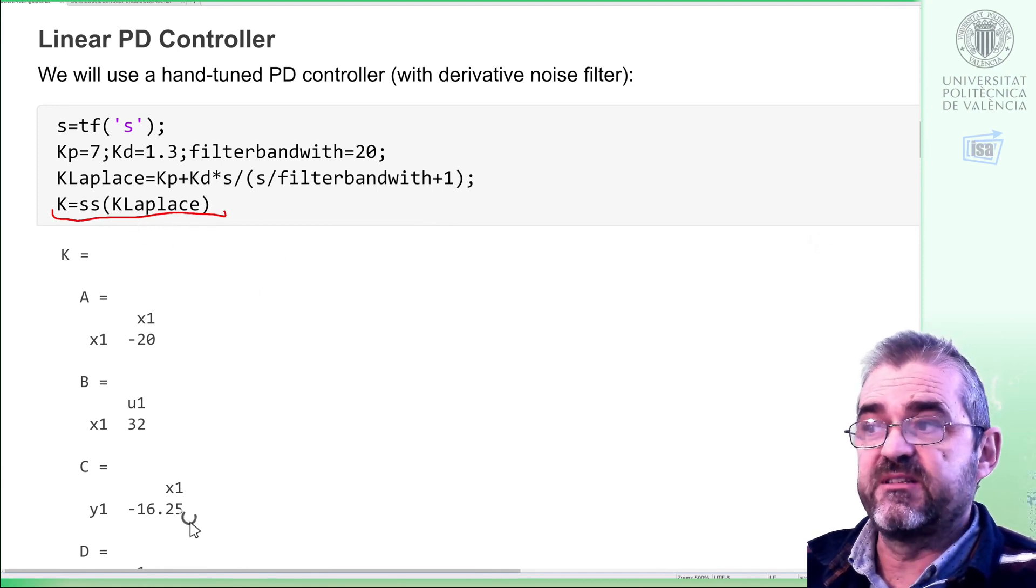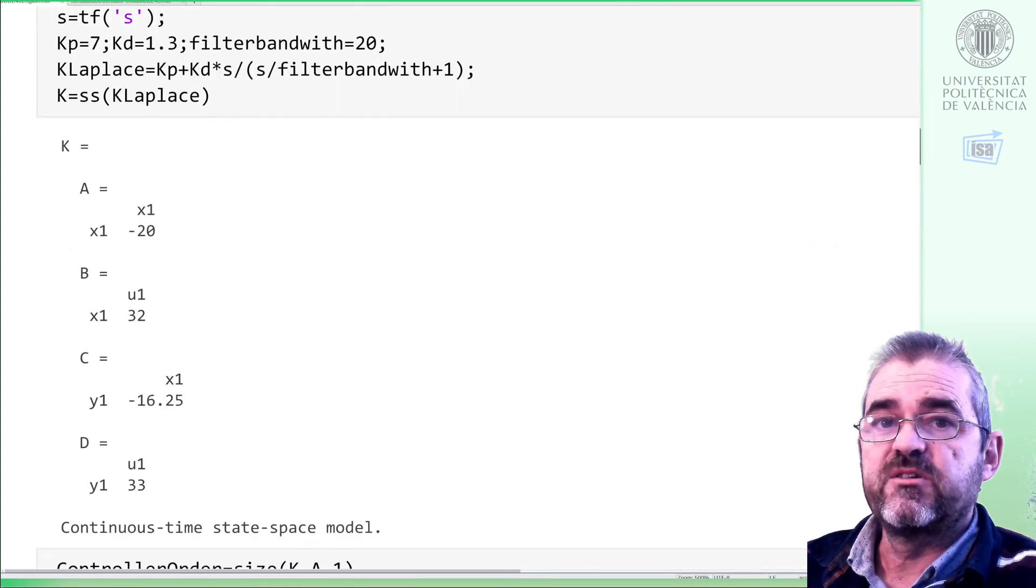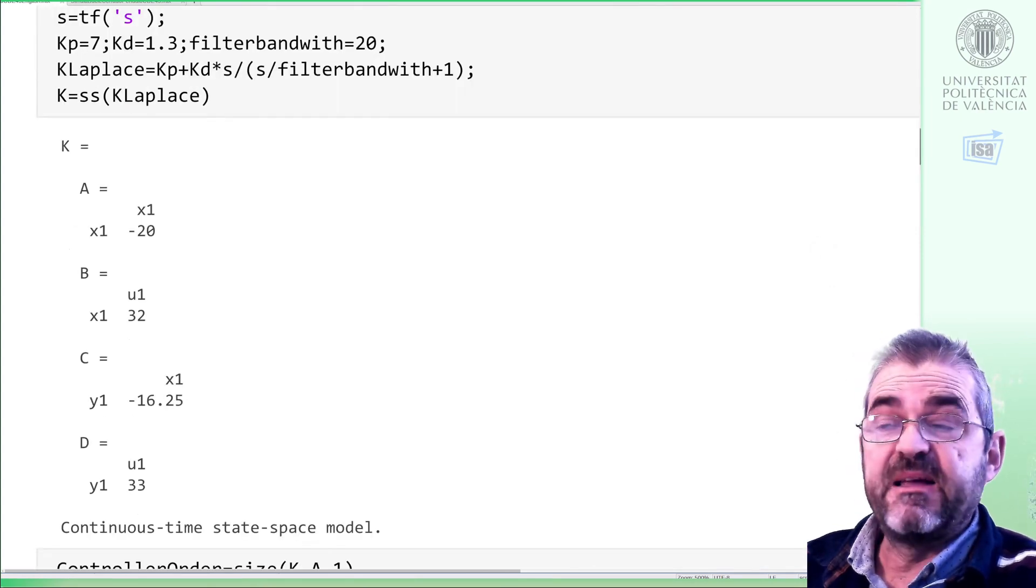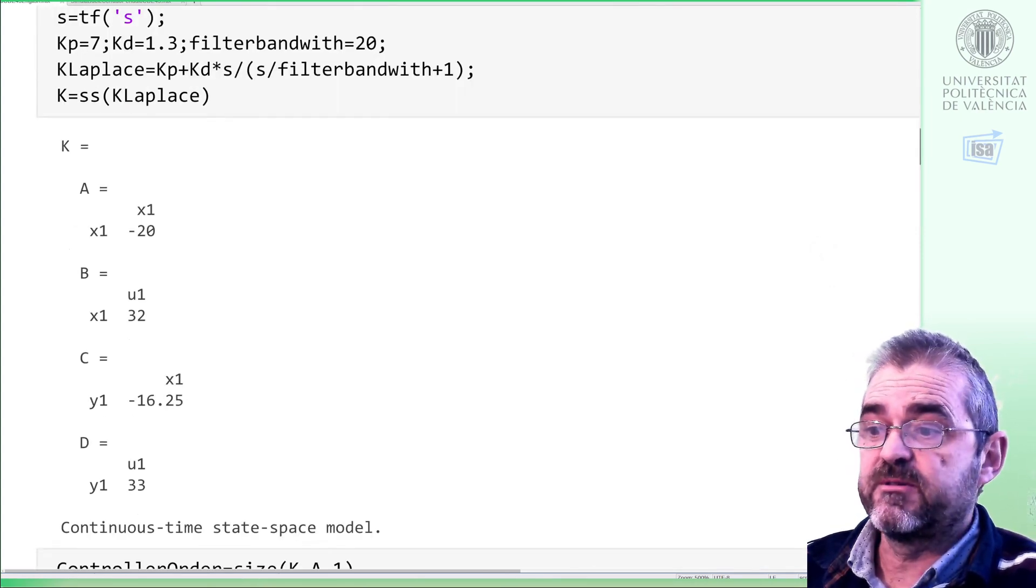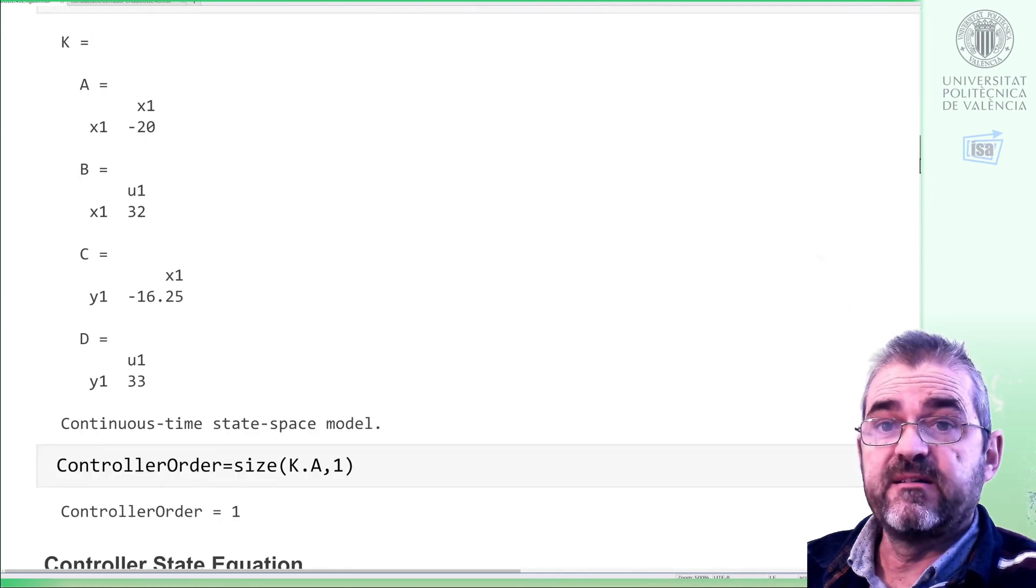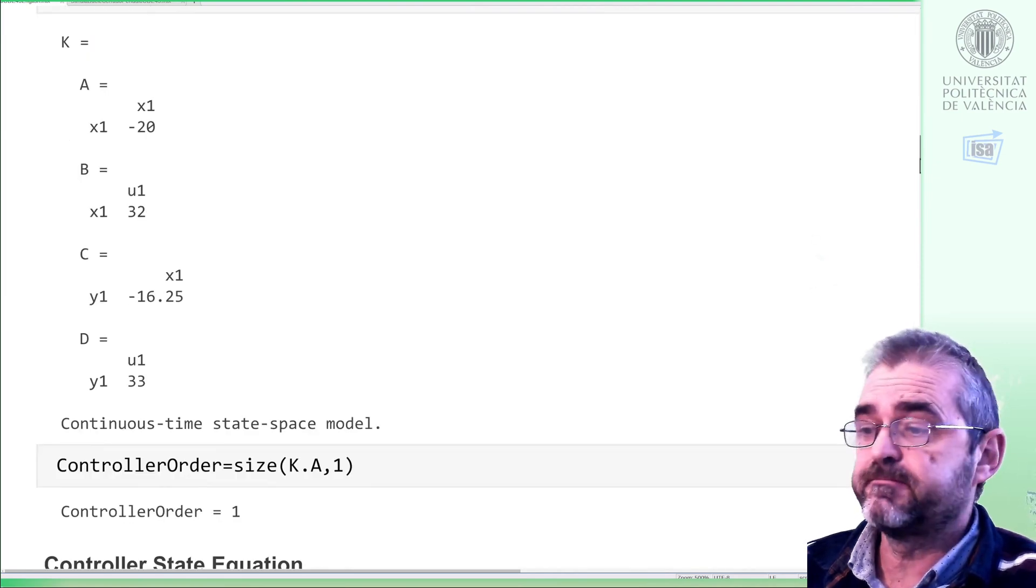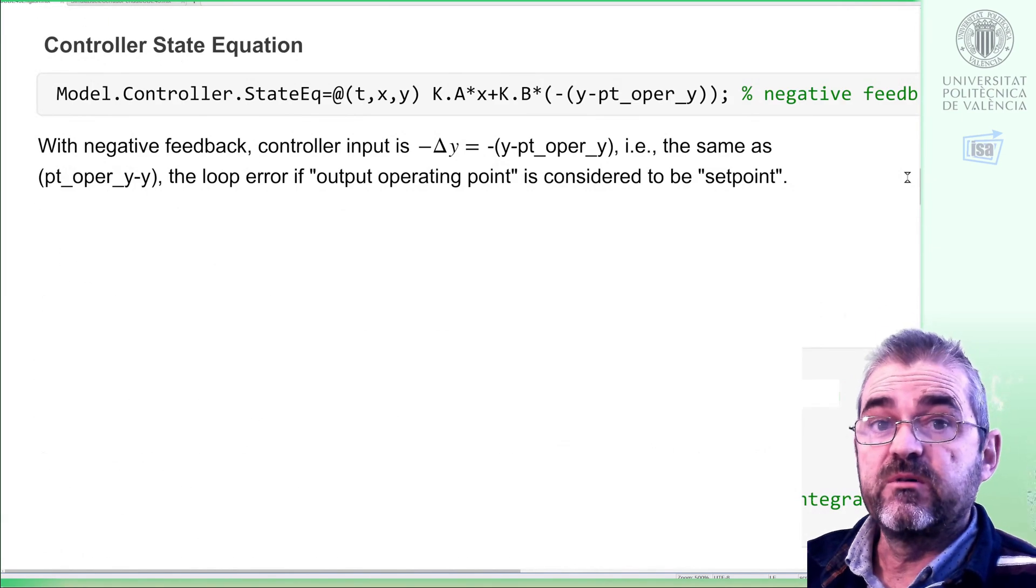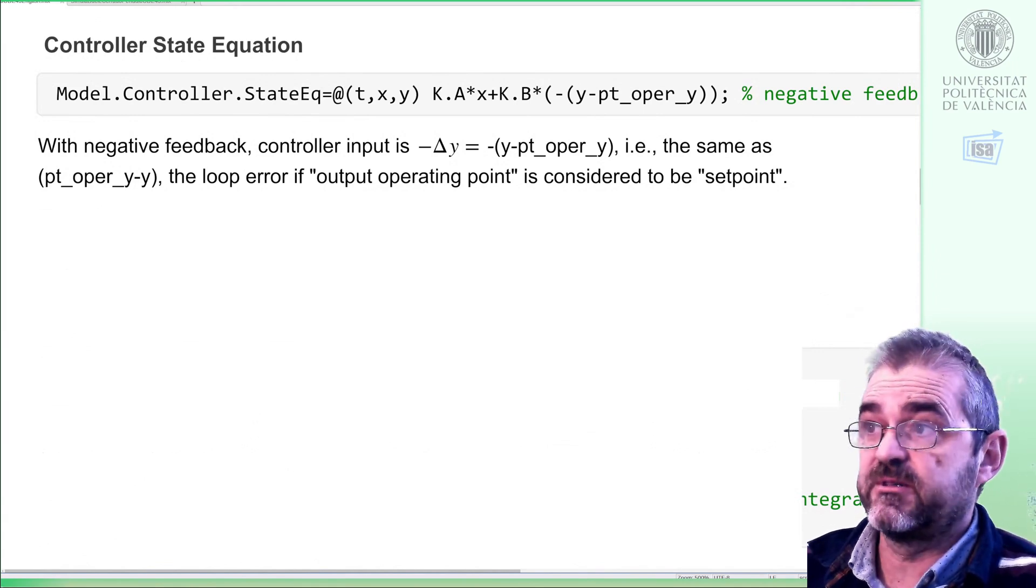In order to integrate differential equations, we need state-space representations, so we transform the controller in the Laplace domain to equations in the time domain, the standard A, B, C, D state-space. So these are the matrices building a state-space representation of my controller. It's order 1 because of the derivative filter, and we'll now code state and output equations of the controller.